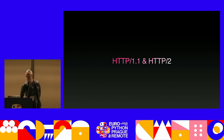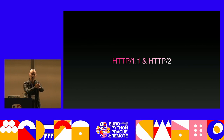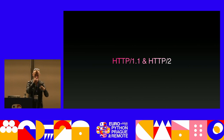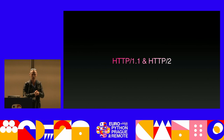HTTP1 is a text-based protocol capable of handling a single request and response over a TCP stream at any one time. HTTP2 brought a whole bunch of performance improvements by allowing multiplexing of multiple HTTP requests and responses over a single TCP stream, avoiding the need to set up multiple TCP streams when making lots of concurrent requests. It's also a binary protocol with features like flow control for network efficiency and header compression for bandwidth efficiency.